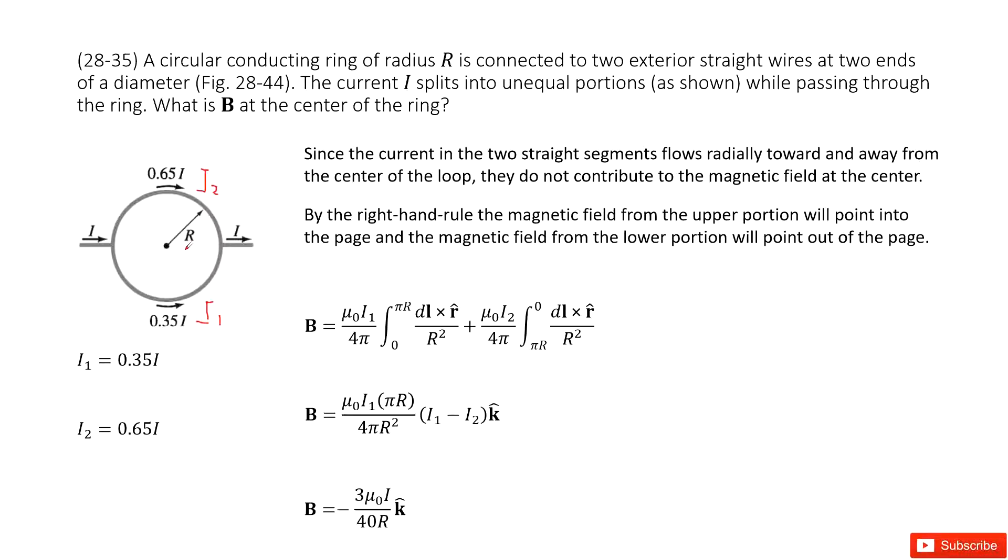We need to find the magnetic field at the center of the ring, this position. As we can see in these two sections, these two parts, the current goes through this line, so the magnetic field is zero. So we don't consider it.